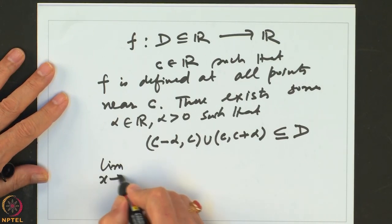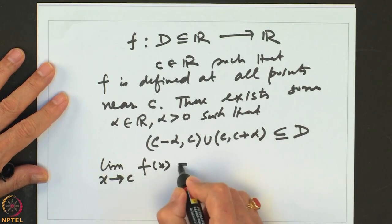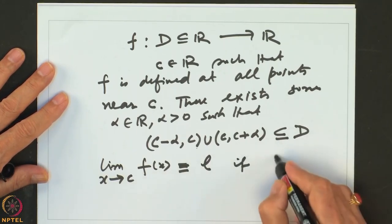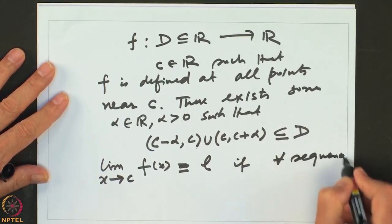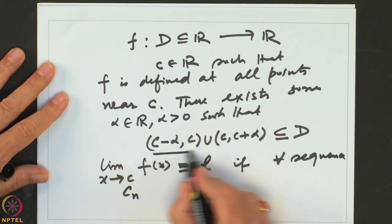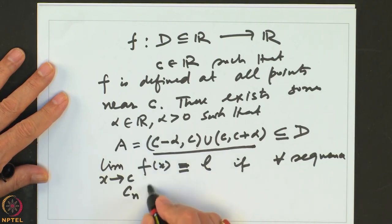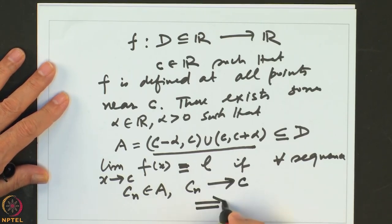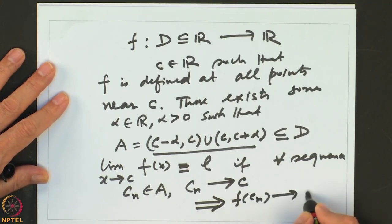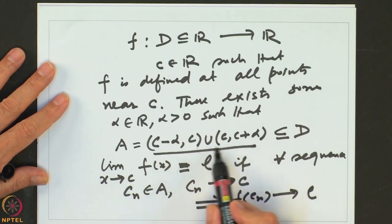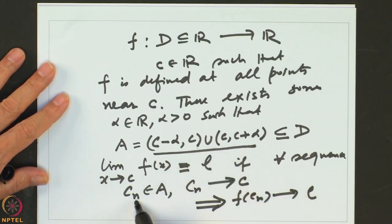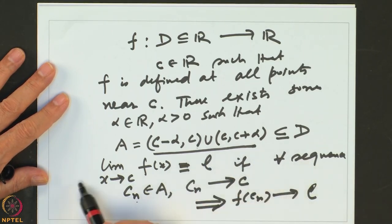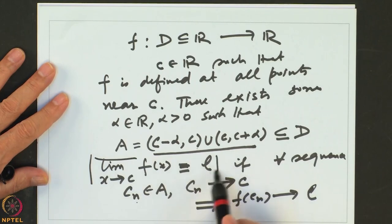We say that the limit of x going to C of F(x) is equal to L if for every sequence Cn in this part — let us call this set A — for every Cn belonging to A, Cn converging to the point C should imply that F(Cn) converges to L. So for every sequence in the domain converging to C, F(Cn) should converge to the value L. Then we say that the limit of the function exists and is equal to L. That is the concept of limit.